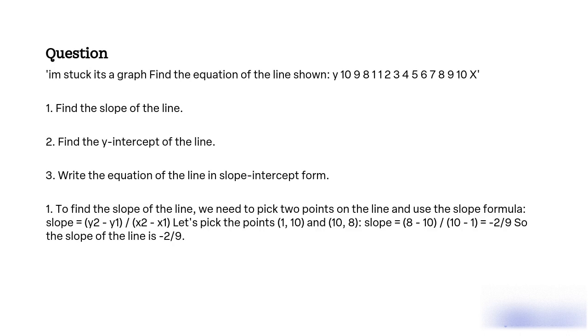1. To find the slope of the line, we need to pick two points on the line and use the slope formula: slope = (y2 - y1) / (x2 - x1). Let's pick the points (1, 10) and (10, 8). Slope = (8 - 10) / (10 - 1) = -2/9. So the slope of the line is -2/9.